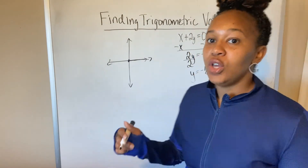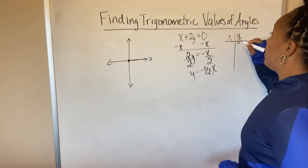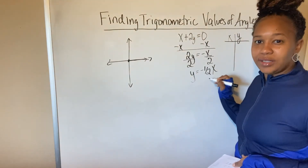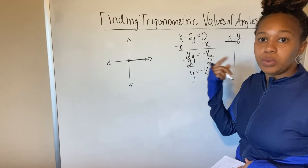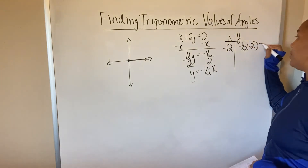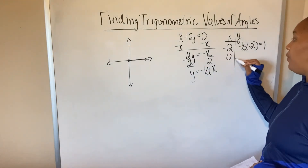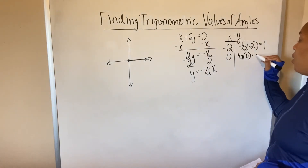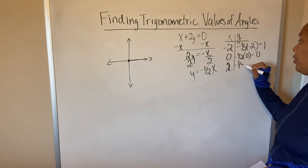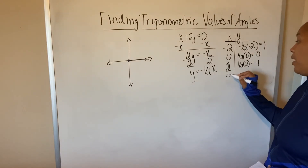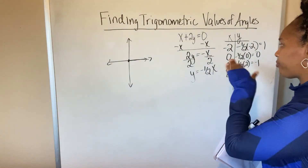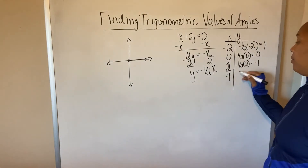To graph it, pick values of x and find the corresponding y values. Because there's a fraction with denominator 2, I'll pick multiples of 2. If I plug in negative 2 for x, I get negative one-half times negative 2, which is 1. If I plug in 0, I get 0. If I plug in 2, I get negative one-half times 2, which is negative 1. I probably shouldn't have plugged in negative 2 since x must be positive — I'll show you why — but I'll use it just to illustrate the full line.